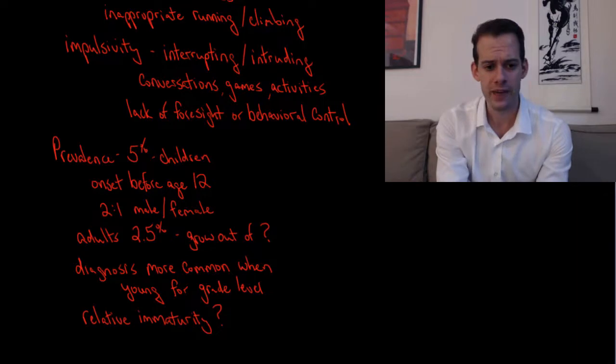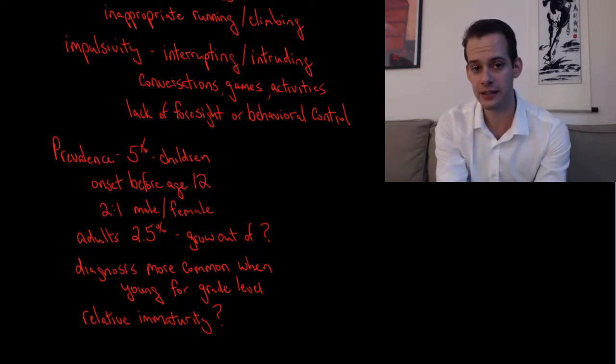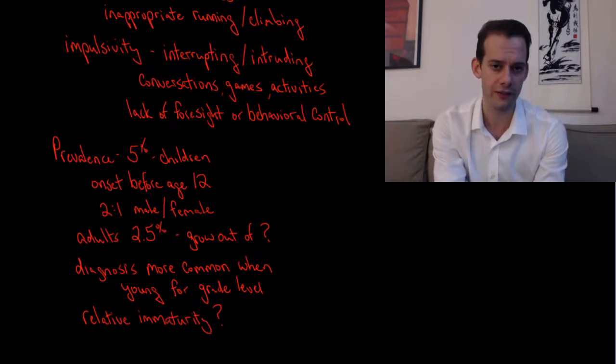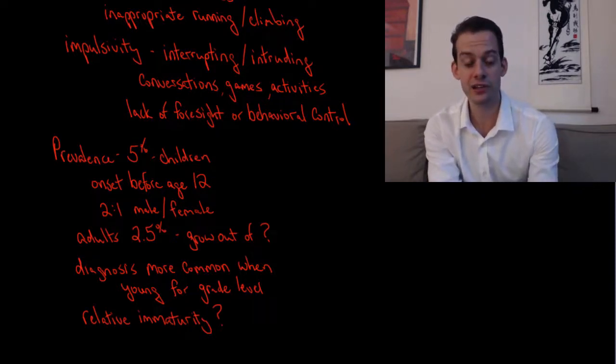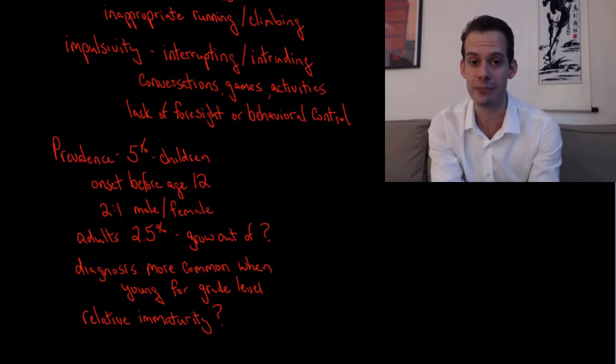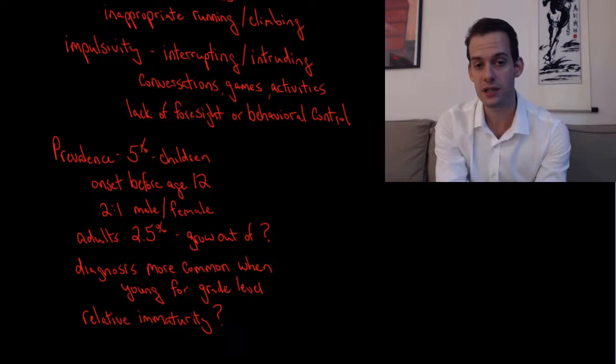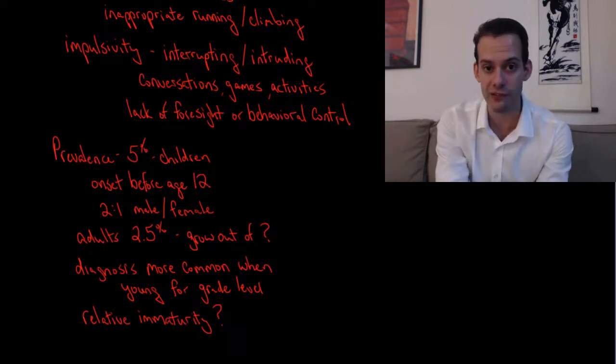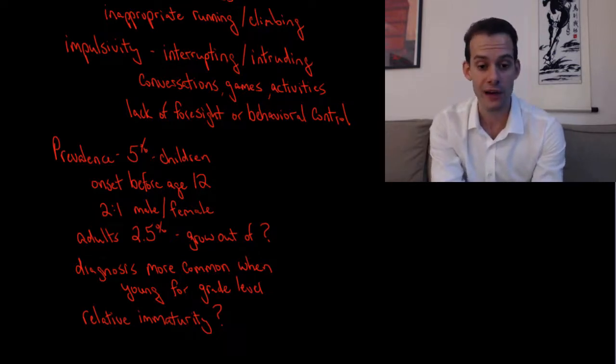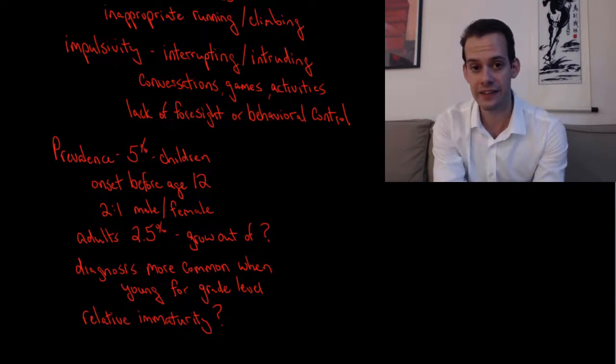One way we can see this is a Canadian study that found diagnosis is more common in children when they're young for their grade level. This suggests that there's some misinterpretation going on - these children are actually just relatively immature compared to their classmates. Teachers see their reduced level of cognitive control or behavioral control as a sign of a disorder rather than recognizing that these children are just younger and haven't had as much time to develop control over these areas.